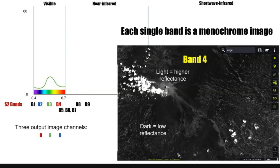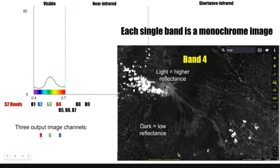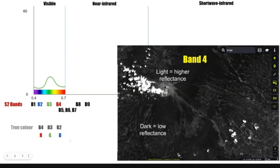How do we turn this into a true color image? If band four is a monochrome image, how do we turn it into a true color image? When producing these images, we have three output channels — the same principle applies to computer monitors, TVs, and cameras. Those three output channels represent the three different wavelengths of light that we can distinguish with our own eyes: red, green, and blue. To turn this into a visible wavelength image, you need to match the band with the correct color — band four goes to red, band three goes to green, and band two goes to blue. The true color image would look like that.